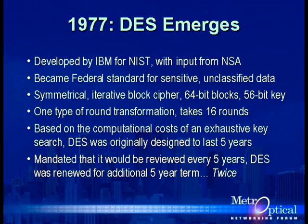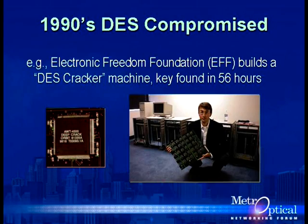In 1977, NIST introduced the Data Encryption Standard, DES — a symmetrical iterative block cipher operating on 64-bit blocks using a 56-bit key, taking 16 rounds to encrypt or decrypt a block. One assumption at the time was that it would be computationally cost-prohibitive to do an exhaustive search for a 56-bit key. NIST mandated the DES standard be reviewed and renewed every five years, until in the late 90s DES was compromised. A machine built by Paul Kocher used 1,800 ASICs to find a DES key in just 56 hours. DES also succumbed to massive parallel processing of the Internet, as well as advances in linear and differential cryptanalysis.